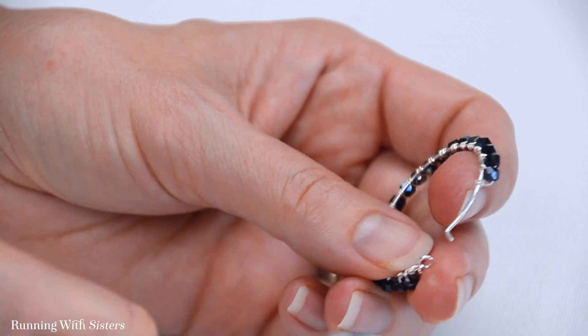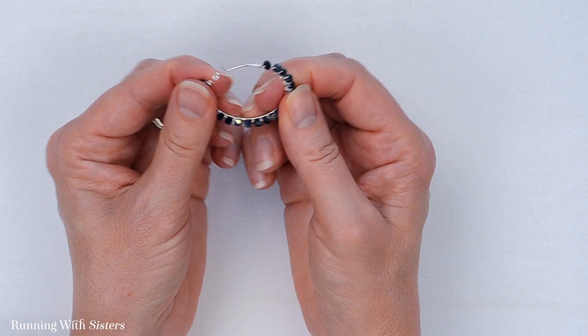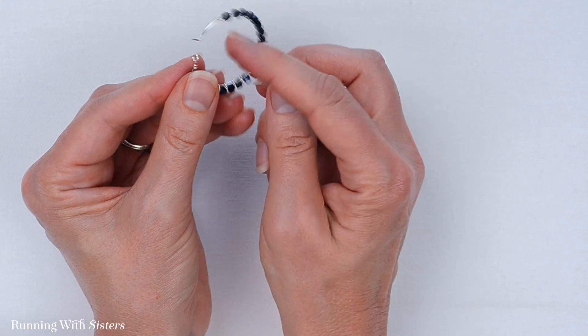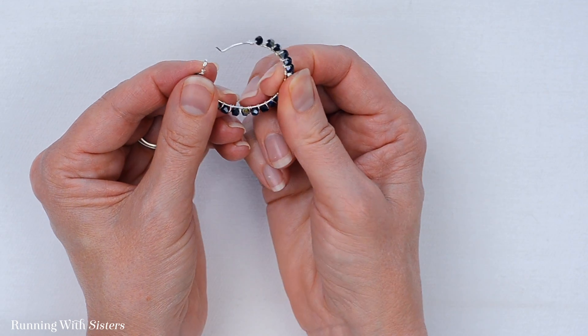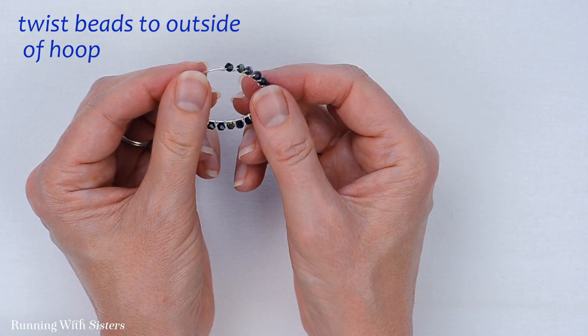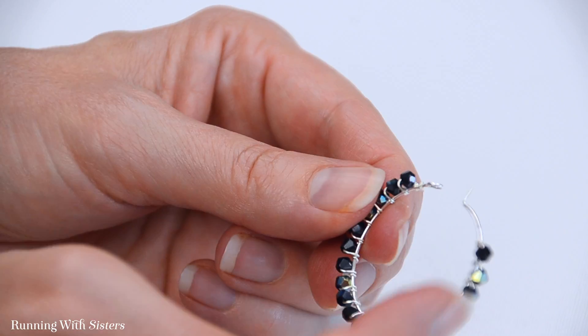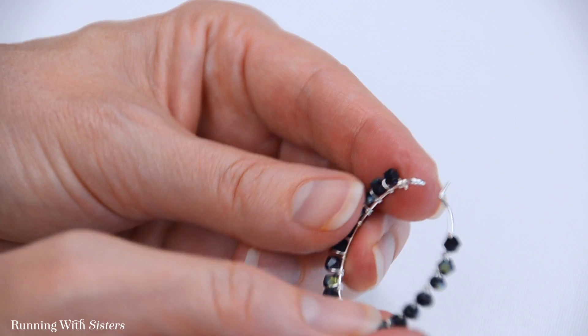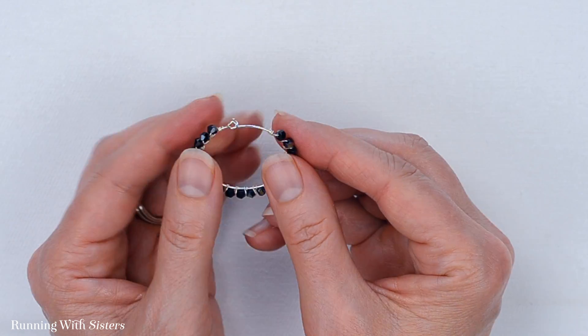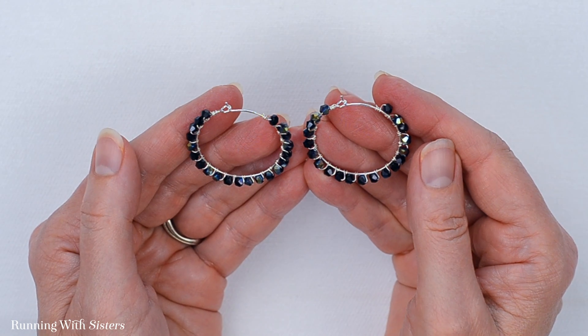If any of your beads are flipping around to the inside, they move around a little bit, you can just adjust them very easily. Just twist them a little bit and rotate them around so that the beads sit like they're lined up like a train all the way around the outside of your hoop. And they clasp just like that. And there are your beautiful crystal wrapped earrings.